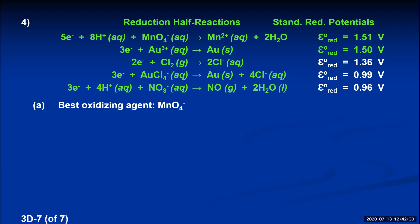The best reducing agent is whatever tends to be oxidized the most, so you go to the least positive reduction potential — the 0.96 at the bottom. Reversing that reaction gives the most spontaneous oxidation. The product in that last reaction is NO, and if you reverse it, NO becomes the reactant. So the best reducing agent is nitrogen monoxide.